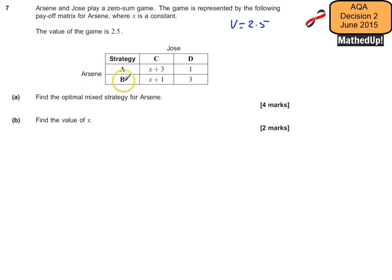Now, from Arson's point of view, I'm going to say Arson is going to play strategy A with probability P and strategy B with probability 1 - P.